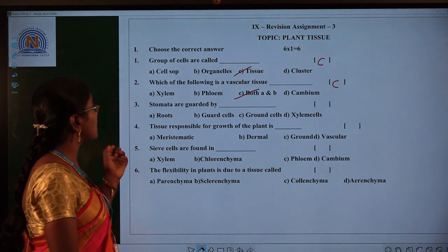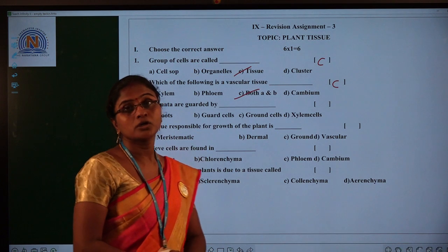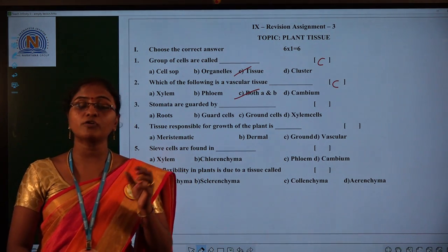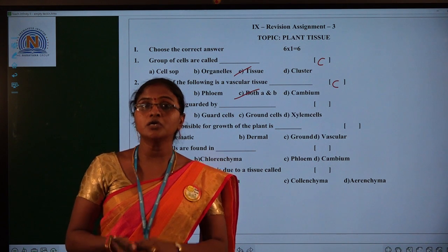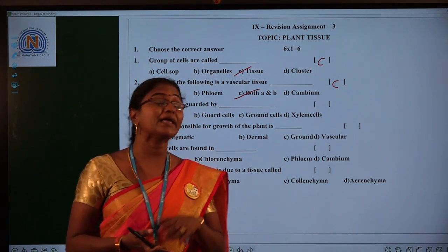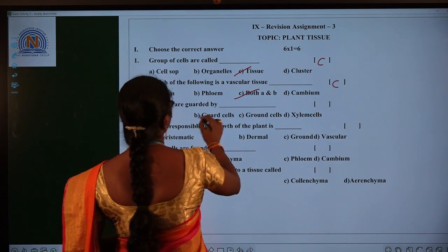And the third one, stomata are guarded by dash. So we know that on the surface of leaf, minute openings will be present. They are called as stomata. So these openings are guarded by guard cells. And the option B.